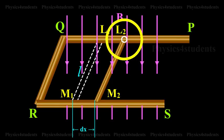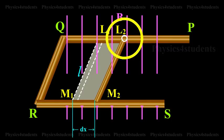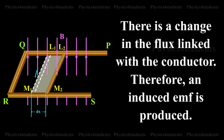Due to the change in the area L2L1M1M2, there is a change in the flux linked with the conductor. Therefore, an induced EMF is produced.